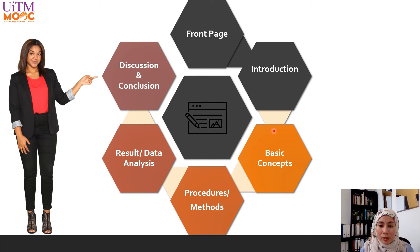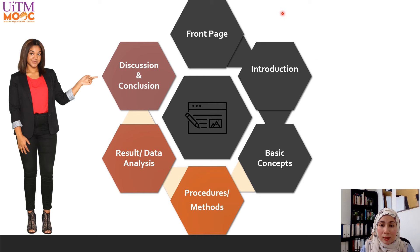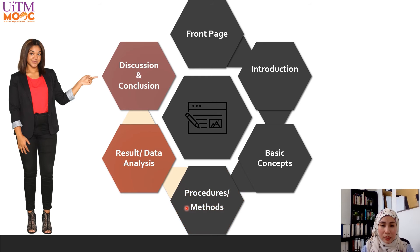Basic concept includes a brief theory about the test in addition to a clear statement of the exact meaning of the conducted test. Students may include any theoretical formulas to explain about the test. For procedures or methods, it is best to write them in point form and describe the actual procedures conducted in the lab — nothing more or nothing less. Whatever you do in the lab for that particular experiment, you put it in the methodology or procedures.